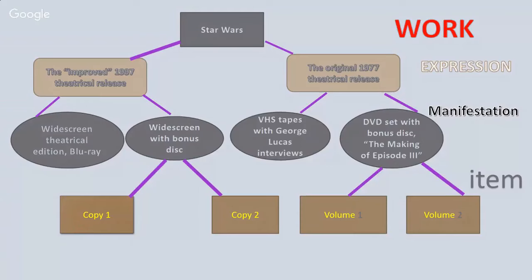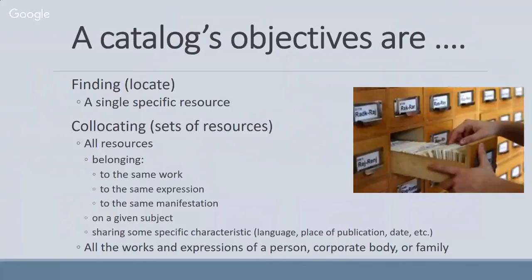That's our very brief walk into FRBR. Most importantly, remember those four terms — the work, the expression, the manifestation, and the item — because you will see some of that terminology in RDA records. So keep that in the back of your mind.